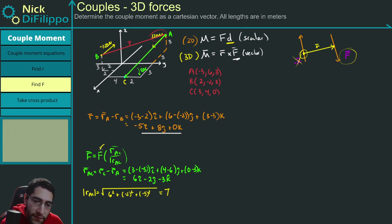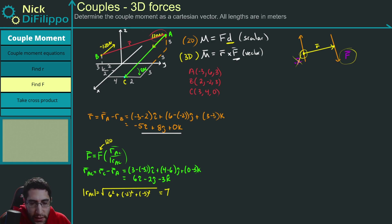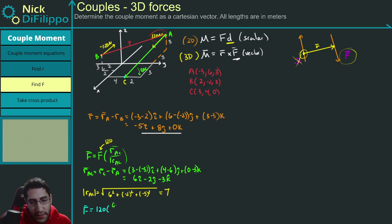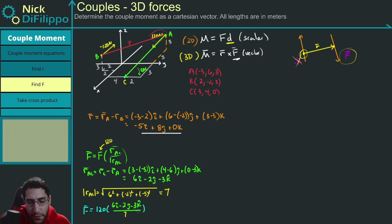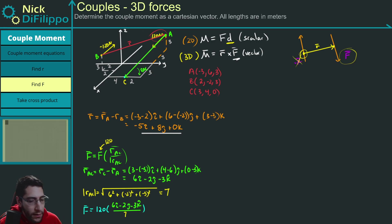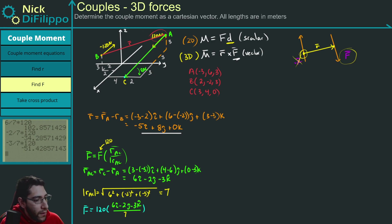Now I know all the pieces. The magnitude is 120 Newtons as given. So F equals 120 times (6i - 2j - 3k) divided by 7. Multiplying each component: 6/7 × 120, -2/7 × 120, and -3/7 × 120 for the I, J, and K components respectively.